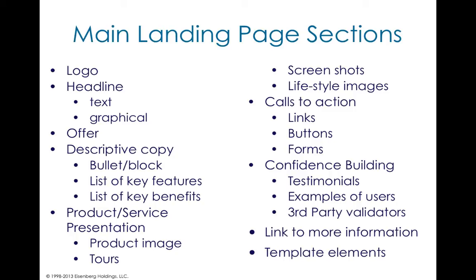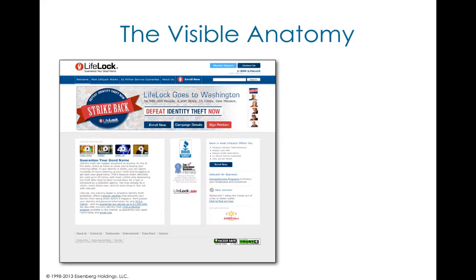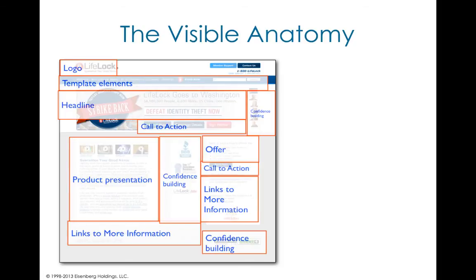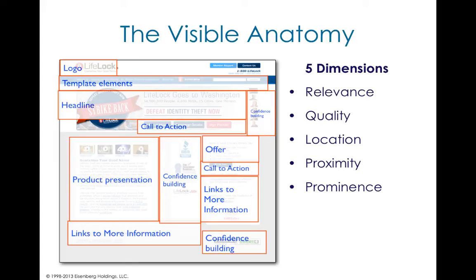Calls to action can be links, buttons, or forms. Then there are confidence-building elements — your testimonials, examples of users, or third-party validators — some links to more information, and then of course some template elements. What we typically do is take any particular landing page and overlay all the elements of the anatomy on top of it. Without the details to convey exactly what the page is doing, this gives you a better sense of what is laid out and where. We'll also look at each page from five dimensions: relevance, quality, location, proximity, and prominence. We'll look at some eye tracking related to that.